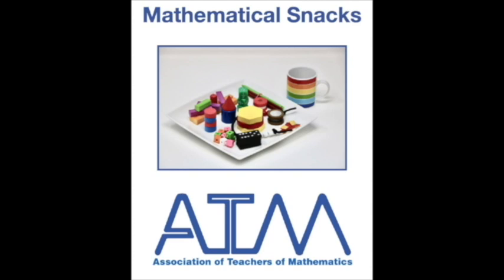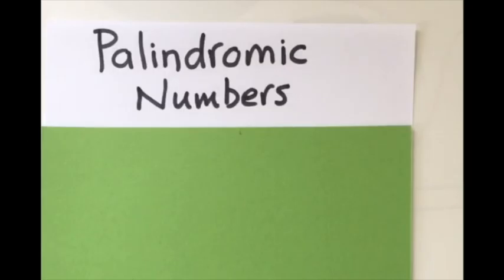This is a mathematical snack from the Association of Teachers of Mathematics. A palindromic number is one which reads exactly the same backwards as it does forwards.